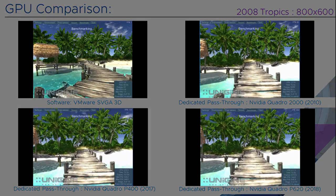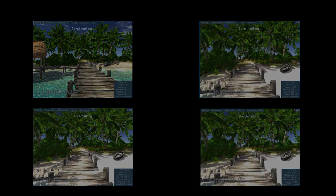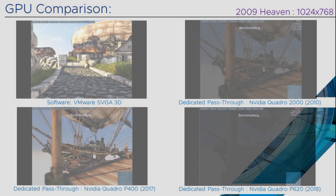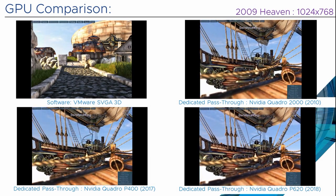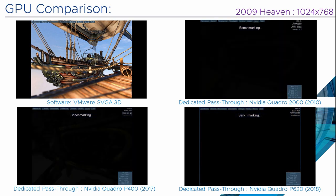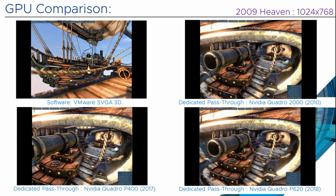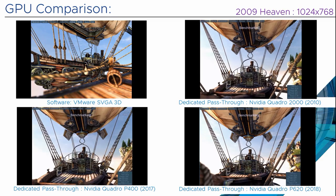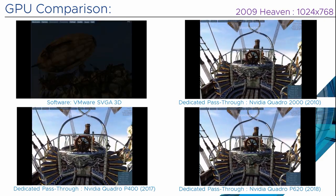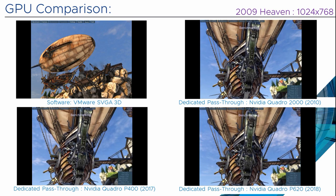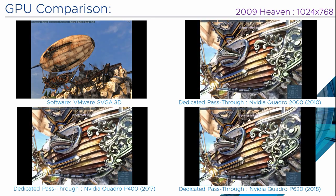The next benchmark we're going to run is called Heaven, and this is another benchmark from the same organisation, Unigine. This is their 2009 Heaven benchmark running in 1024x768. The same cards are in the same position again, but if you now look in the bottom left hand corner you'll see an NVIDIA Quadro P400. The card was released in 2017 and again it's a P series, a Pascal based Quadro. As you can see doing really well on this one, reasonably smooth, quite a detailed animation. Again in the top corner the software defined graphics card, the SVGA 3D, is struggling a little bit to catch up. Most of the dedicated cards are doing well, some are slightly more jerky than others, but they are keeping up with the graphics and the animation.